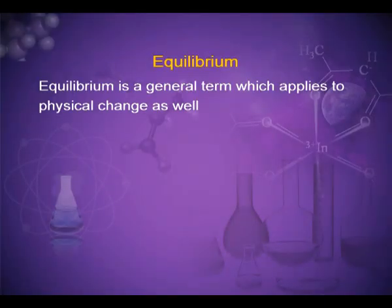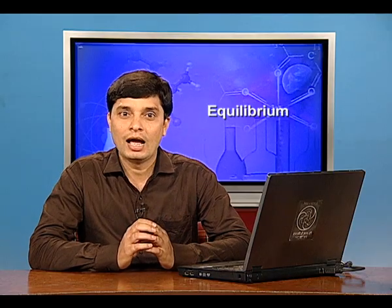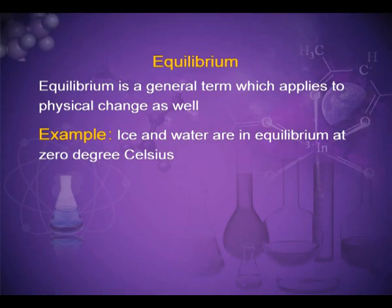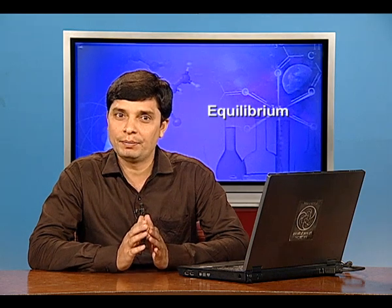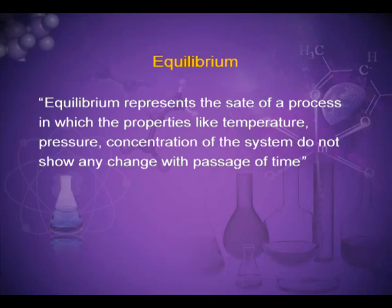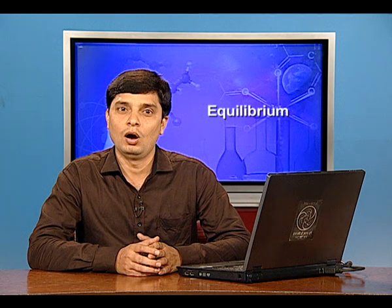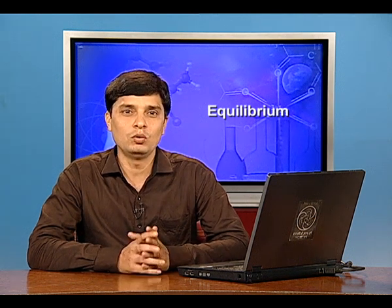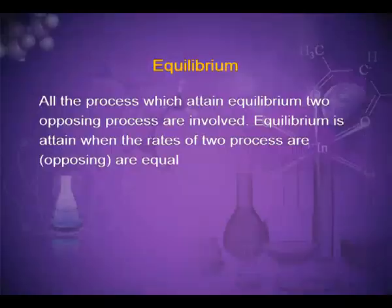Equilibrium is a general term which applies to physical change as well. For example, ice and water are in equilibrium at 0°C. Equilibrium represents the state of a process in which properties like temperature, pressure, and concentration of the system do not show any change with passage of time. Equilibrium is attained when the rates of two opposing processes are equal.